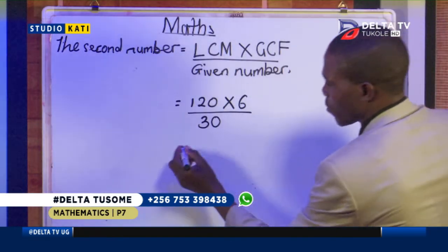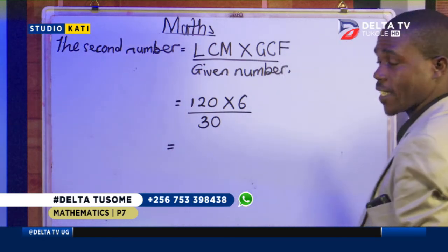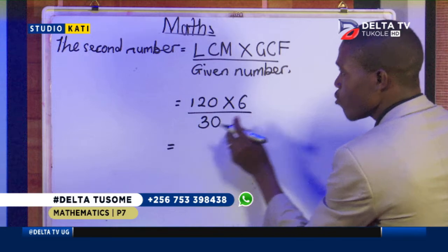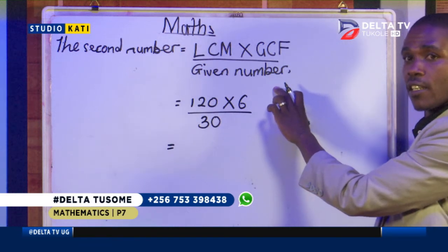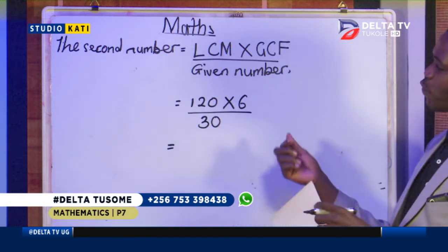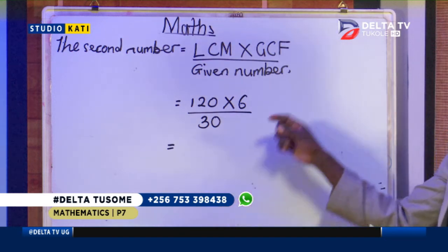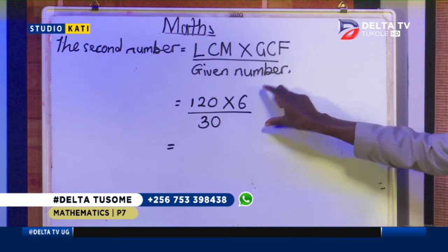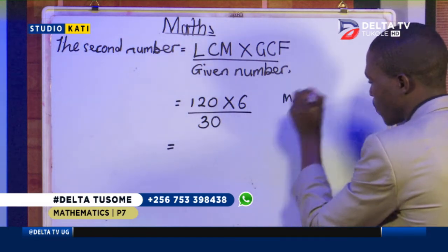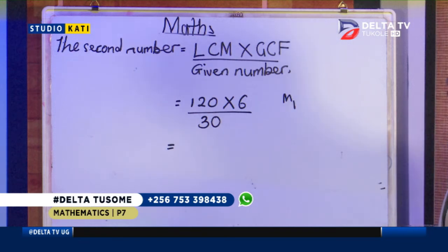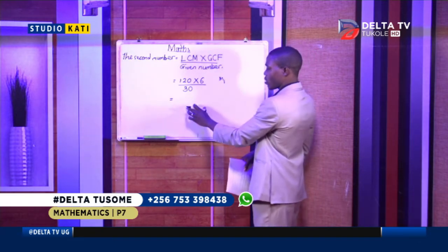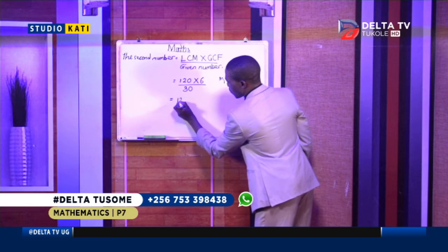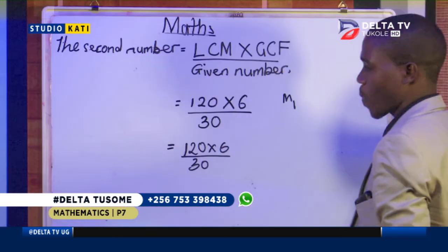Let's work out the number. Say equals — having jumped a line so that your working is neat. Don't reduce from the first step. In most cases you may reduce from the first step and reduce wrongly, and you will miss marks. At least, even if you fail the question at the end, but here you've stated the formula and substituted correctly, you'll get at least a mark for the method. So I advise you not to reduce from the first step. Rewrite this same working so that you may reduce at that step. And so it would be 120 times 6 divided by 30.